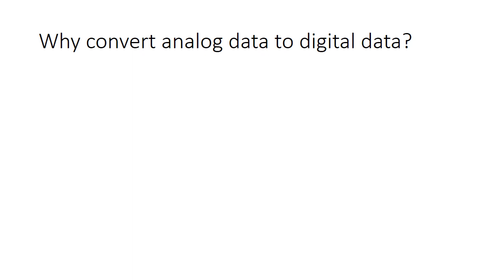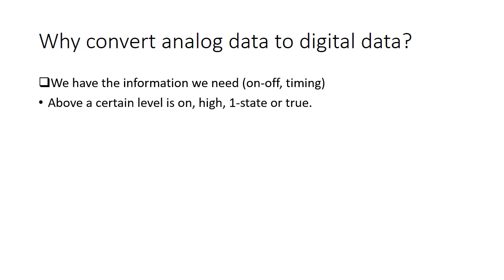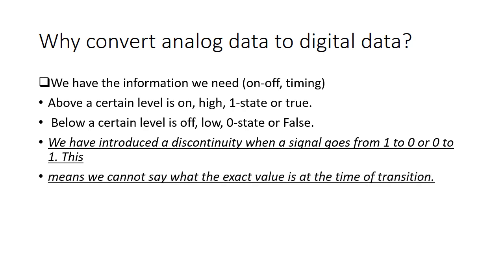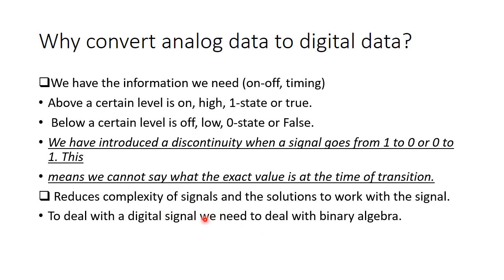What is the need? Why do we convert analog data to digital data? Because we have information we need on-off timing. Above a certain level is on, high, one state or true. Below a certain level it is off, low, zero state or false. We have introduced a discontinuity when a signal goes from one to zero or zero to one. This means we cannot say what the exact value is at the time of transition. It reduces complexity of signals and the solutions to work with the signal. To deal with digital signals we need to deal with binary algebra. To deal with analog signals we need to deal with calculus to approximate, and calculus is far more complicated than binary algebra.